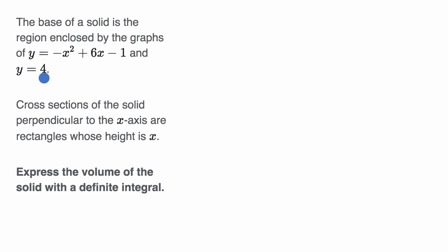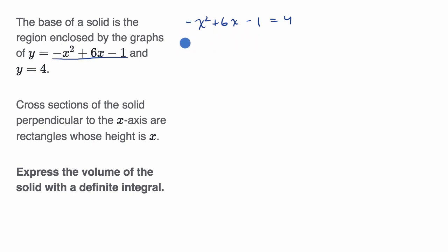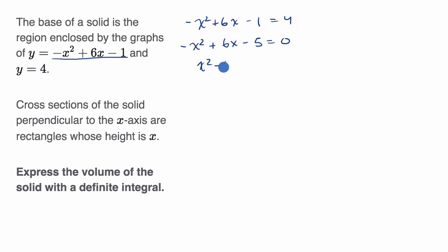When do we have the same y value? Another way to think about it is when does this thing equal four? So if we set them equal to each other, we have negative x squared plus 6x minus one equals four. This will give us the x values where these two lines intersect. If we want to solve for x, we can subtract four from both sides: negative x squared plus 6x minus five equals zero. We can multiply both sides by negative one, giving us x squared minus 6x plus five equals zero.